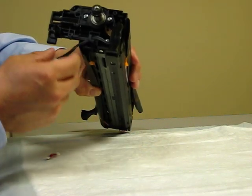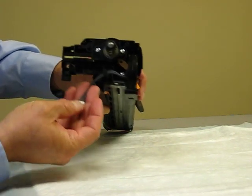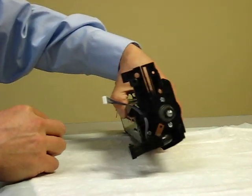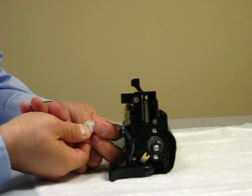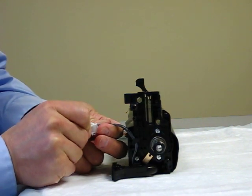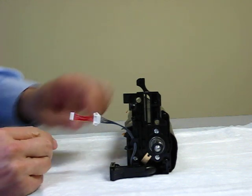Then we locate the gray wire here with the connector on the end. Install the connector onto the gray wire.